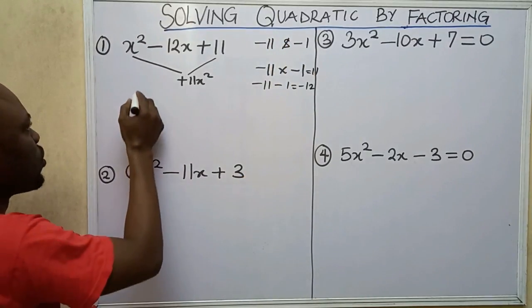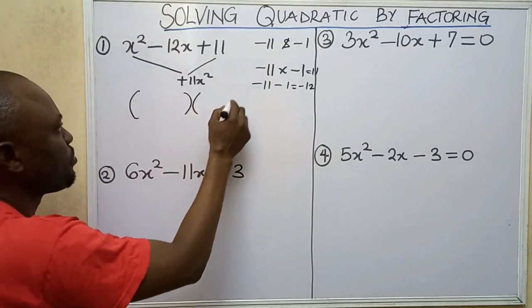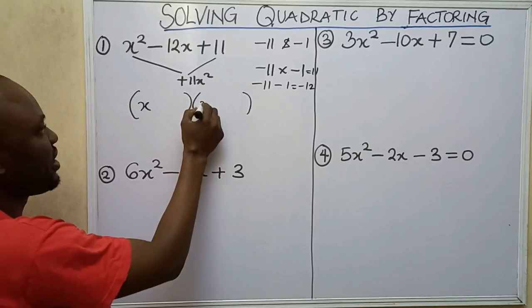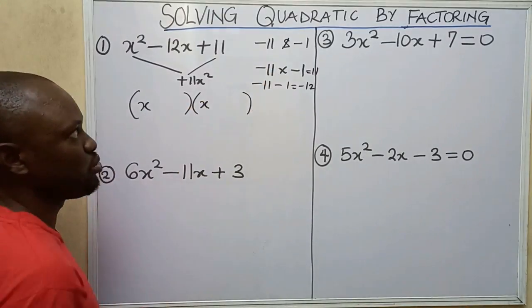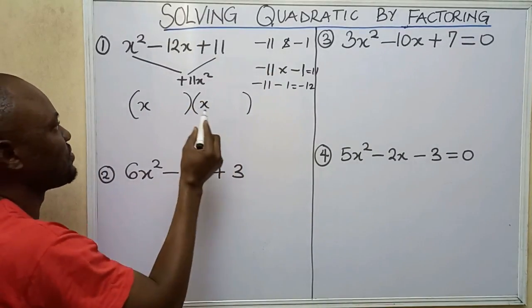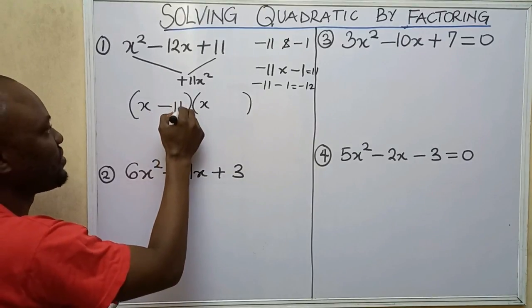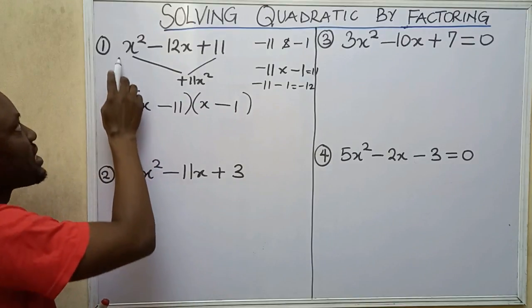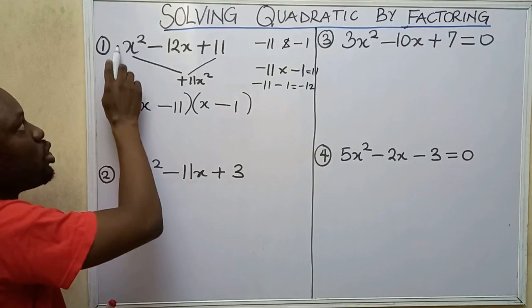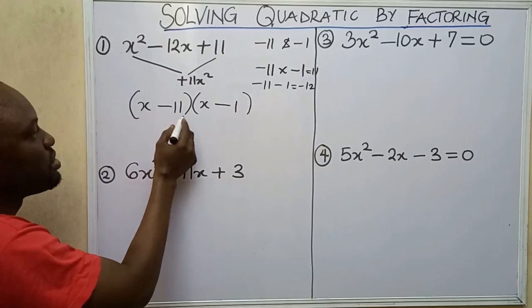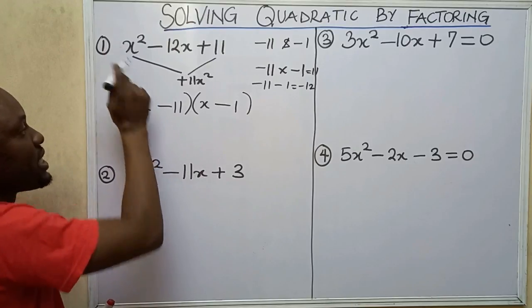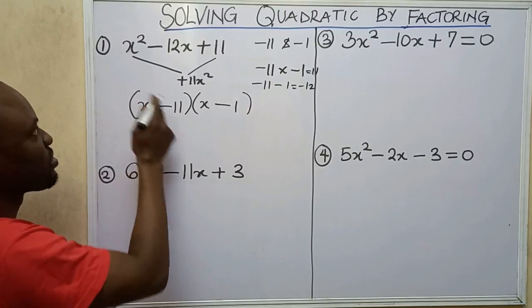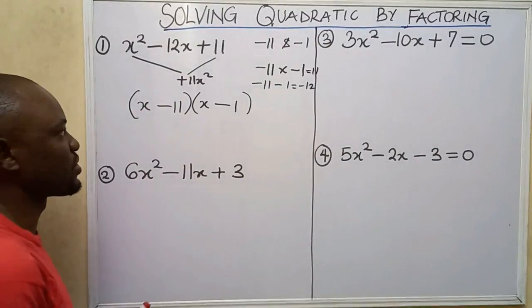Now I'll open up two parentheses. I'm going to put x here and x on the other side. My two factors are minus 11 and minus 1, so I put minus 11 in the first and minus 1 in the second. Since the leading coefficient is 1, I don't need to divide — 1 has no effect on division — so this will be my answer.